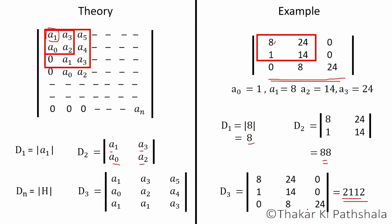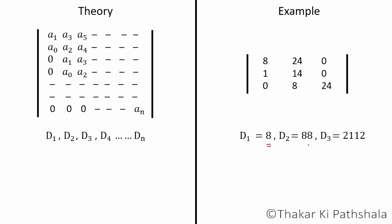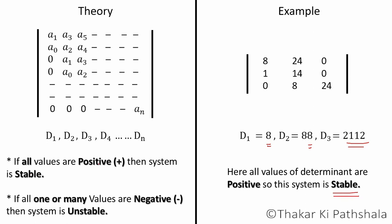Now this is our last step to find if the system is stable or not. If we look at the calculated value of D₁, D₂, and D₃ for this example, then all these values are positive, so system is stable. If we see in general, then if the values you are getting of sub-determinant are positive, then system will be stable. But if you are getting any one value or multiple values of sub-determinant negative, then the system is unstable.